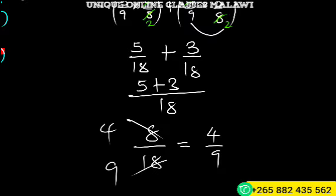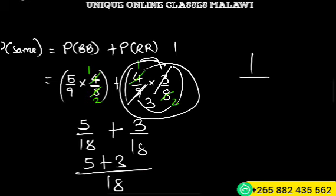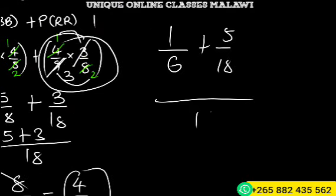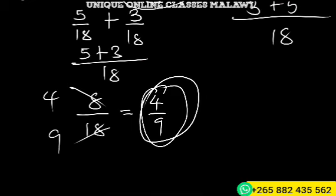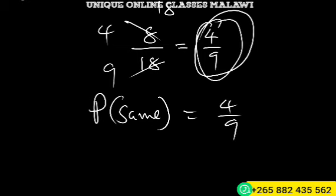8 over 18 can be simplified as 4 over 9. So we have 3 plus 5 which equals 8, and 8 of 18 simplifies to 4 of 9 as our answer. The probability of getting the same color is 4 over 9.